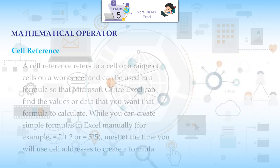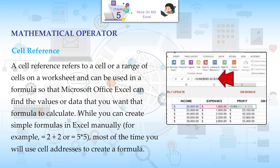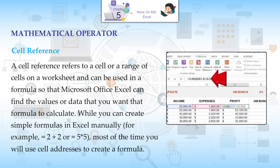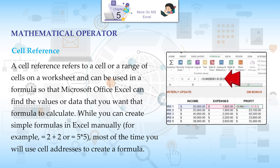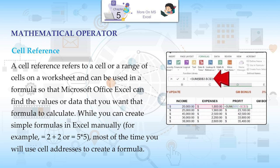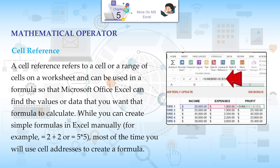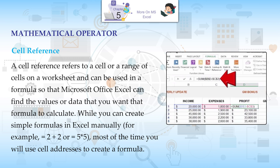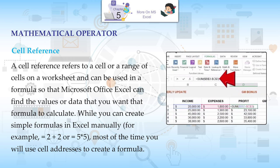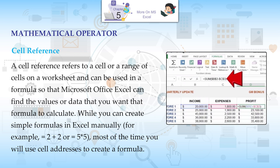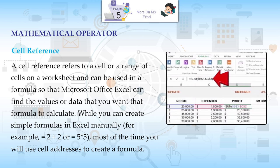A cell reference refers to a cell or a range of cells on a worksheet and can be used in a formula so that Microsoft Office Excel can find the values or data that you want that formula to calculate. While you can create simple formulas in Excel manually, for example =2+2 or =5*5, most of the time you will use cell addresses to create a formula.